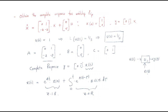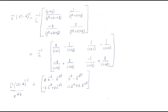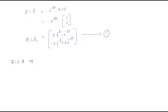This is a time domain analysis. For the zero state response, the formula is: the Laplace inverse of (sI - A)⁻¹ · B · (1/s). By applying this formula we will get the zero state response.